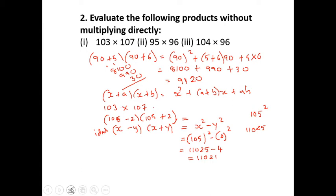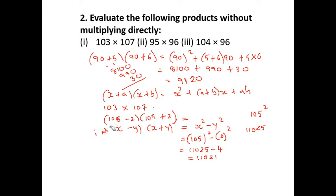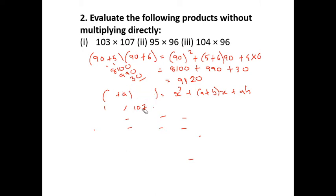One more sum remaining. This sum can be done by two different methods: either as (100 + 4)(100 − 4) using the difference of squares identity, or using (x + a)(x + b). Both ways give the same answer.